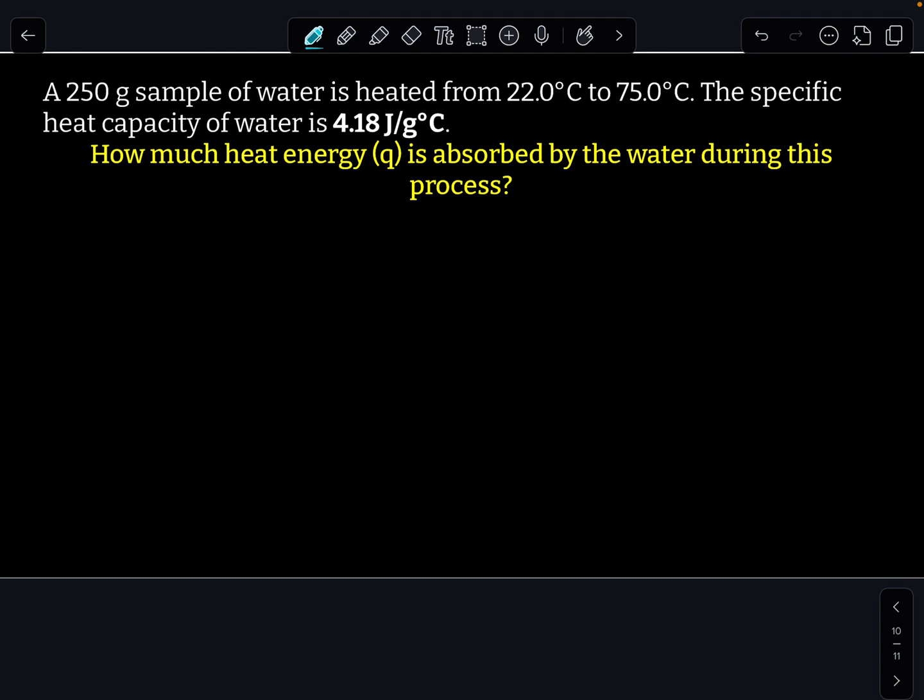Okay, a few things I want to take note here. First is I want to look at my mass and my temperature and make sure that my units match. So this specific heat says it's in grams per degree Celsius. I have grams here. I have degrees Celsius here, so that's all good. The second thing I want to do is write out my equation. So q equals mc delta t.